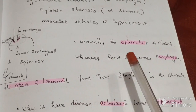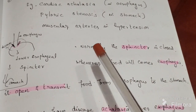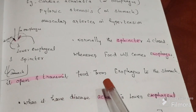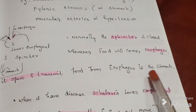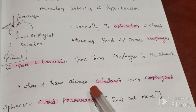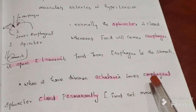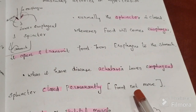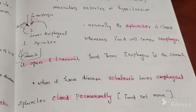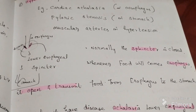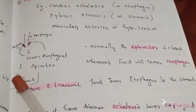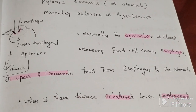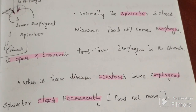Normally the sphincter opens when food comes and transmits it from the esophagus to the stomach. In achalasia, the lower esophageal sphincter is permanently closed and won't open. Because of this diseased condition, food cannot pass — causing stress. This causes hypertrophy of the esophageal smooth muscle.